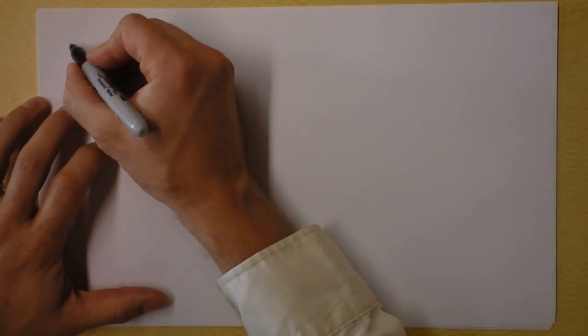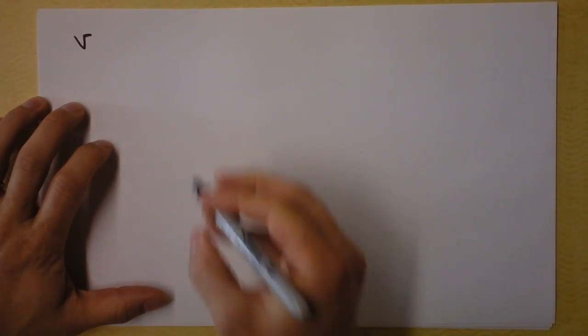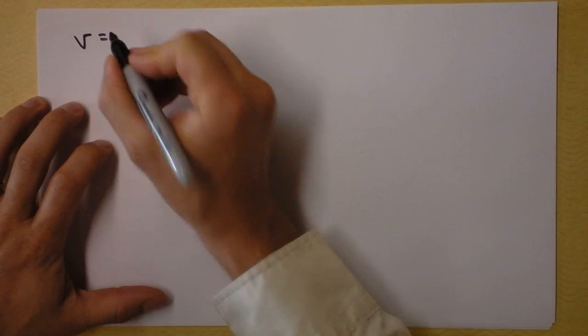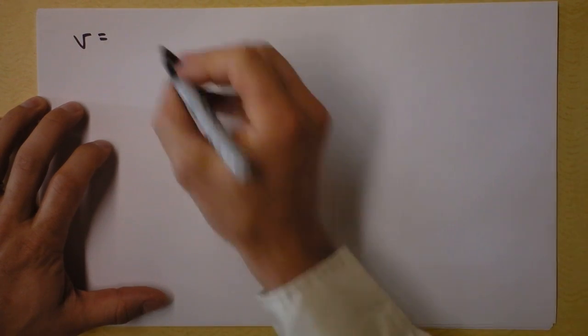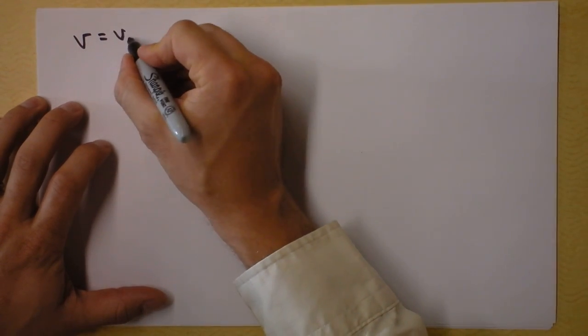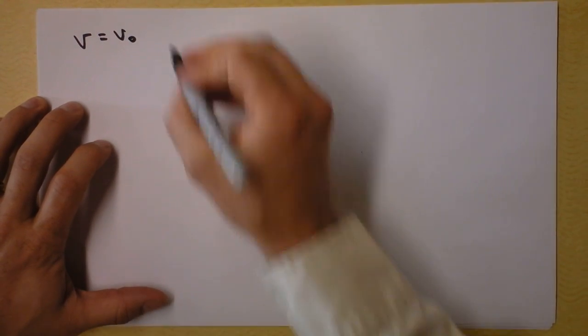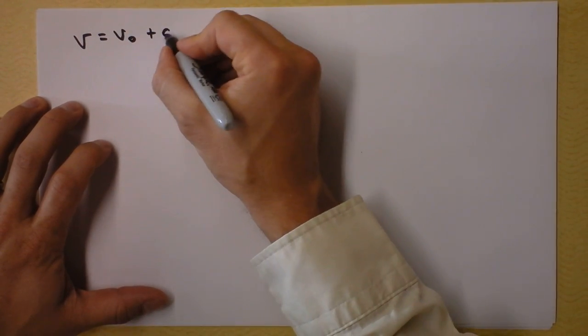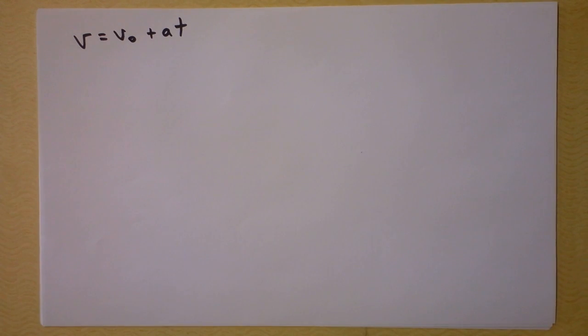Hey boys and girls, I'm trying to get to the equation that I call the classic. This is a derivation of a kinematic equation. I want to start with some things that we know. How fast you're going is how fast you started going plus your acceleration times time. That is the definition of acceleration.